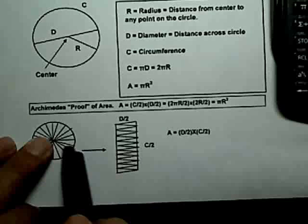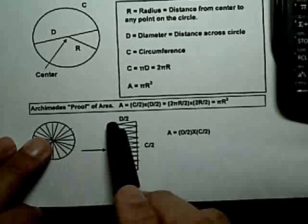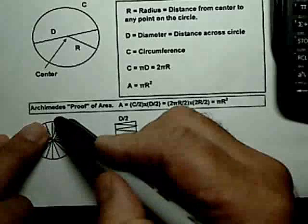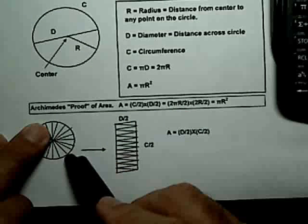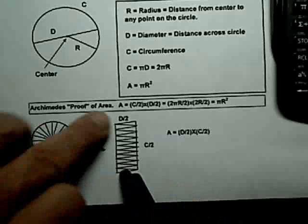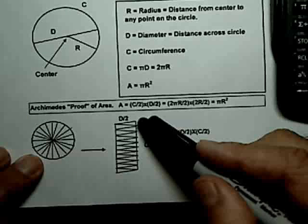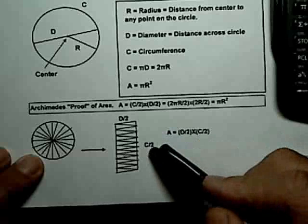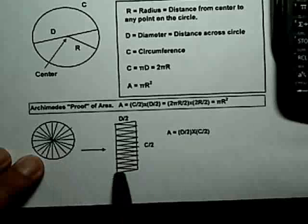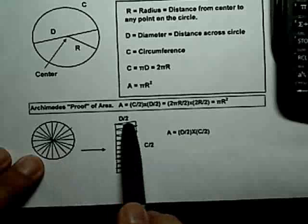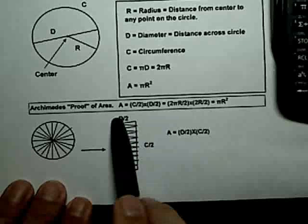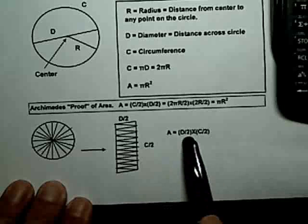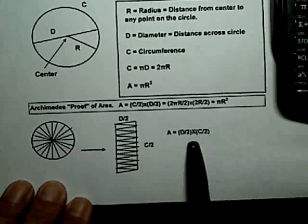And what's the dimensions of it? The width is the radius, or it's the diameter divided by 2. What's the length? If you take all the pieces on the right side and put them all together, stretch them all out, it's half the circumference. So this length is C over 2. So you've got a rectangle now whose width is D over 2, and its length is C over 2. What would be the area of such a rectangle? It would be the width times the length, D over 2 times C over 2. And that's what Archimedes discovered.